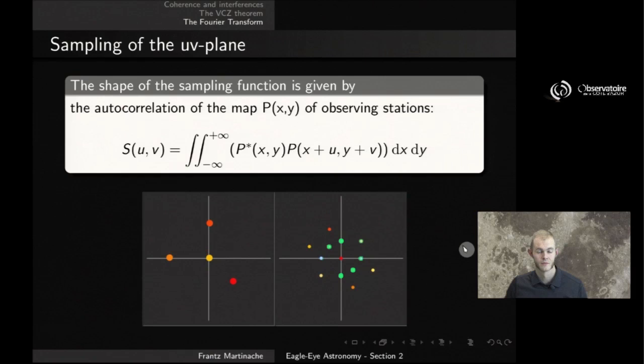Now, you can use one additional trick, something that is called the Wiener-Khinchin theorem, that relates that autocorrelation function to something that unexpectedly happens to be the Fourier transform of the instantaneous point spread function, R. R, in our previous notation in the context of imaging, was the response of our system that such an array with a pupil P would produce. If you look at the equation, it simply comes down to the sampling function of the UV plane, S, happens to be, like we defined it here, the autocorrelation of the pupil. And that Wiener-Khinchin theorem allows us to say that this autocorrelation is the Fourier transform of the response function of our equivalent array.